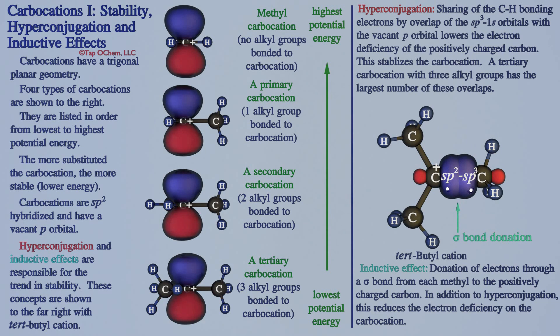Inductive effects also stabilize positive charges. This is a donation of electron density through a single bond. In this animation, the pair of electrons from the single bond shown reside more toward the positively charged carbon, thus helping to reduce its positive charge. As in the case of hyperconjugation, diffusion of the positive charge lowers the energy of the molecule.